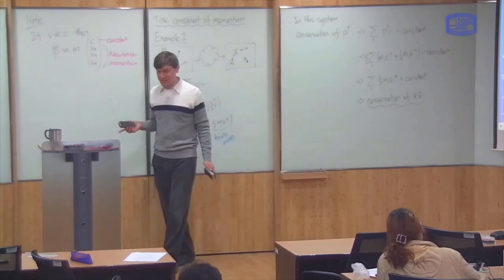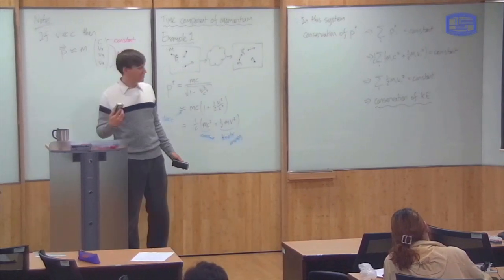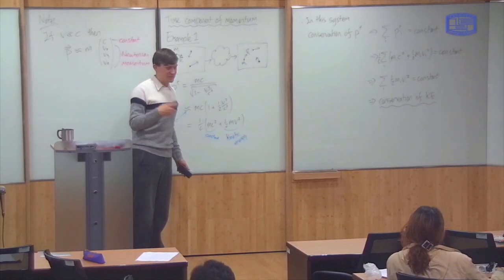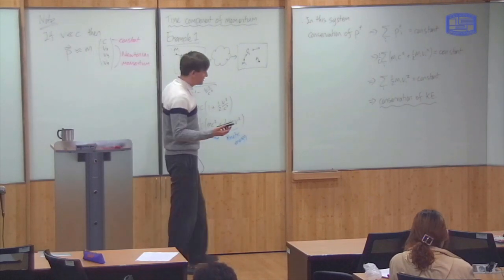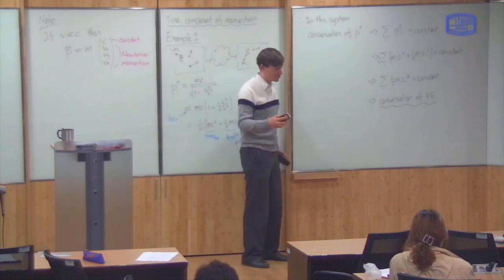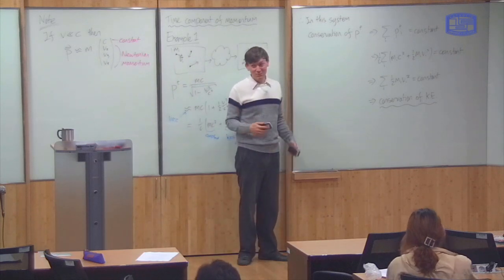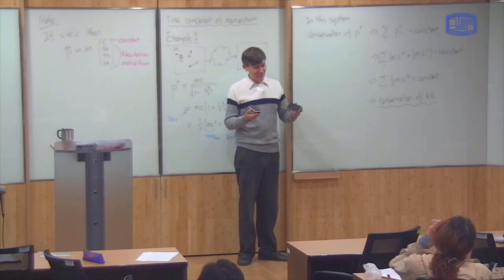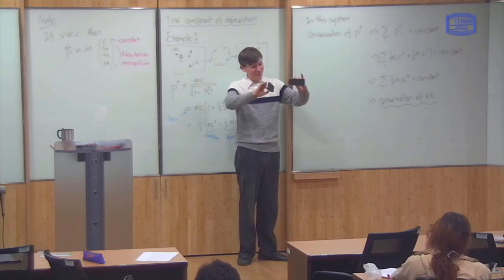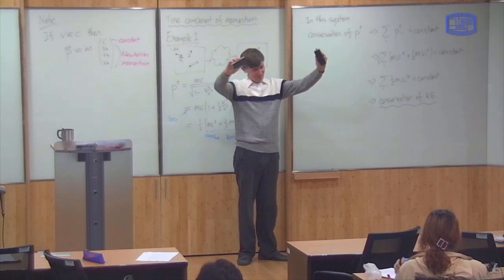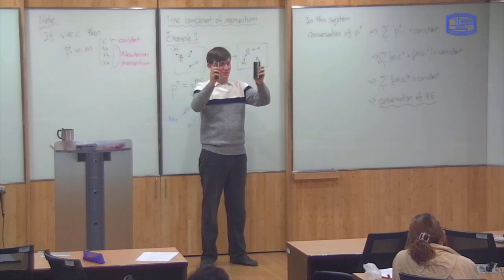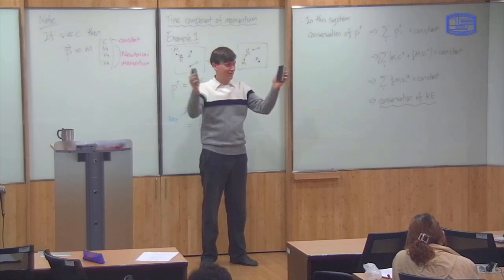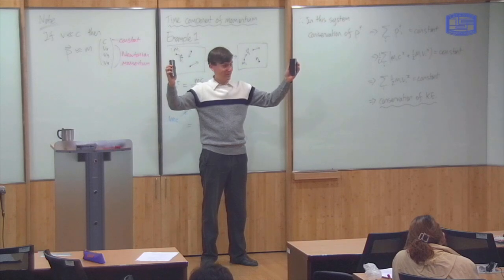The problem is that it's not true that kinetic energy is always conserved. Collisions in which kinetic energy is conserved are called elastic collisions, but not all collisions are elastic. For example, if I take my two bodies to be these board rubbers, I can consider the collision where they come together with equal velocities and then they stick in the middle.